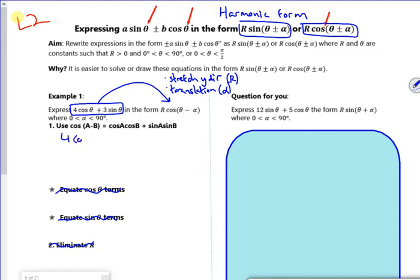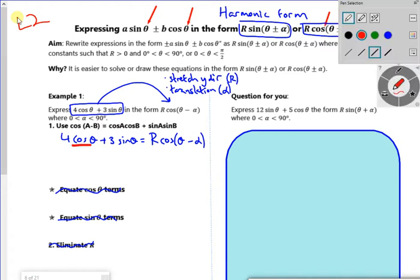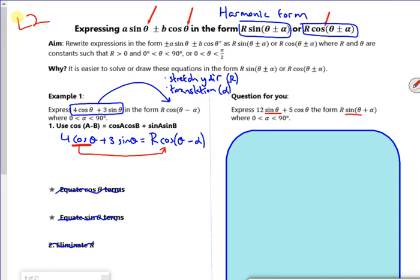Right so we're going to do it as 4 cos θ plus 3 sin θ. So that's equal to r which is the stretch, cos θ minus α. So alpha is the translation. What's important, cos went first. If cos goes first, that matches that cos. So this one here was a sin and it matches sin and that's important.